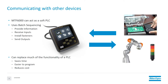When communicating with devices other than a PLC, the MTF-6000 can act as a soft PLC. Basically, what this means is it can provide, through the use of batch sequencing, much more information to the operator, receive inputs from other devices, install the fasteners, and send outputs to the devices. This replaces much of the functionality of a PLC, which can save a lot of time, it's much easier to program than a PLC, and reduces the cost for the total installation.